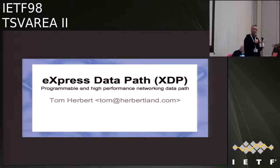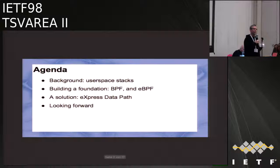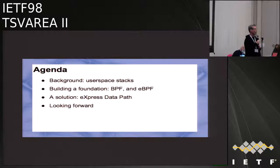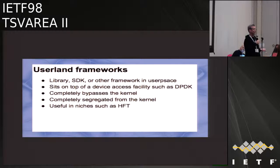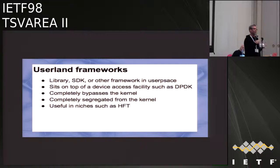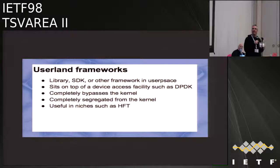So agenda today: I'll go a little bit with history, specifically user space stacks, which have kind of been the current model to solve a lot of these problems. Then we'll go through the foundation — BPF, EBPF — and then present the solution, and then how we're looking forward to extend the solution. User land frameworks: the idea is that there's a library in user space, and the application can access the networking directly. Packets arrive on a queue, and a user space application processes them directly without any interference or processing in the kernel.